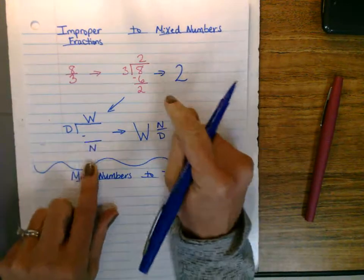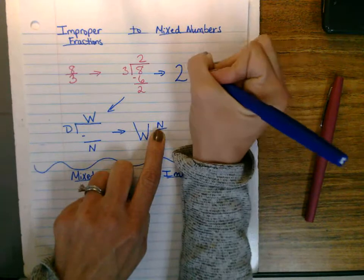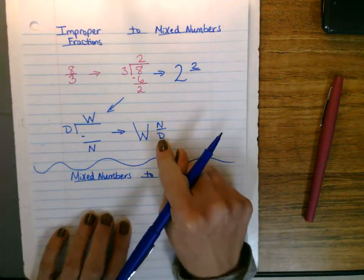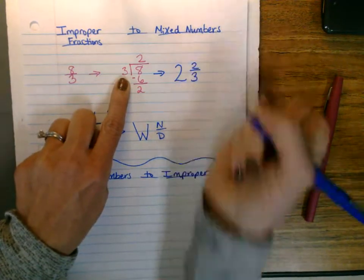She found the numerator down bottom, and the numerator is the top number. This is just when they're learning. We use this. And then the denominator really doesn't ever change, but it's here. So two and two-thirds.